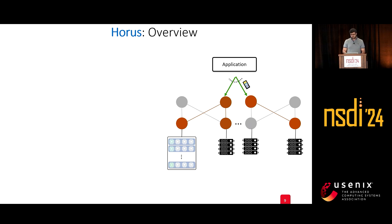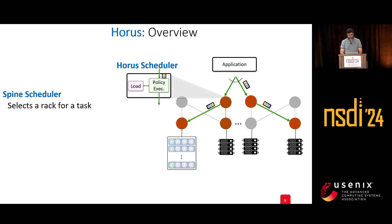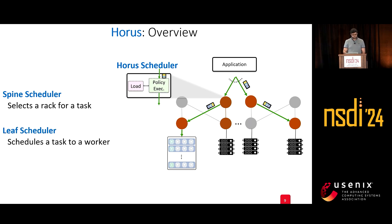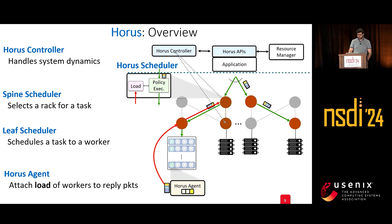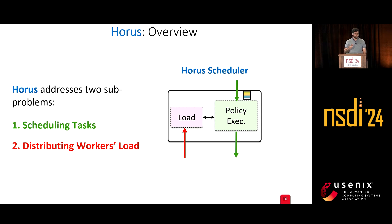HORUS starts with an application sending tasks as packets to randomly selected spine switches, which act as spine schedulers. The spine scheduler selects a rack for the task based on the average load of the workers belonging to that top-of-rack switch. The leaf scheduler then recursively selects a worker for the task. When work is done, the current load of the worker is attached to the reply packet and distributed to all involved switches. A HORUS controller at the top handles system dynamics. HORUS addresses two sub-problems jointly: scheduling tasks from north to south, and distributing worker loads from south to north.